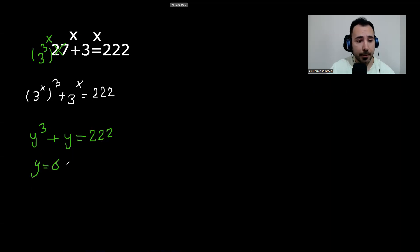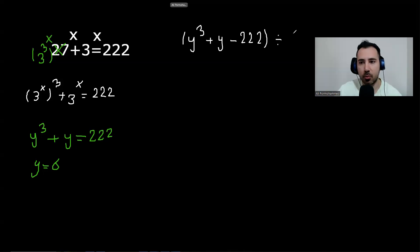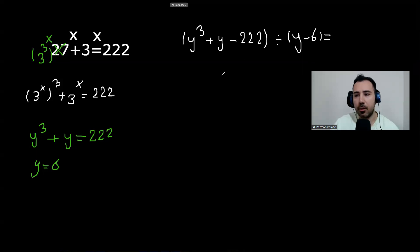To do that, we need to divide this equation by y minus 6, because we know 6 is one of the answers. I'm going to write it here, and I'm going to take this to the left side as well. Y to the power of 3 plus y minus 222. When we divide, we want to divide this by y minus 6, because 6 was one of the answer factors to this equation. We call this factorizing the equation. I've done this before, so I'm just going to write the result without showing all the division steps to keep the video shorter.